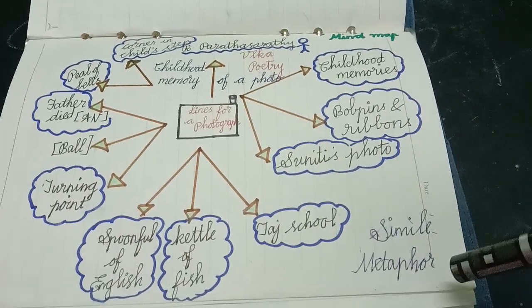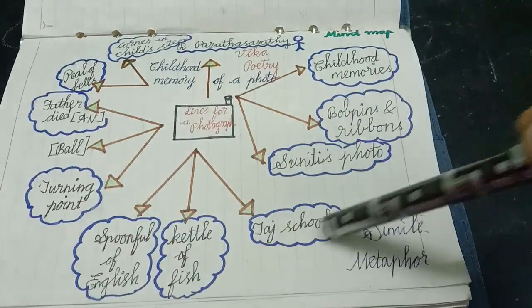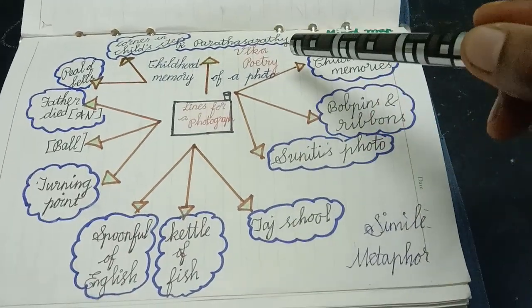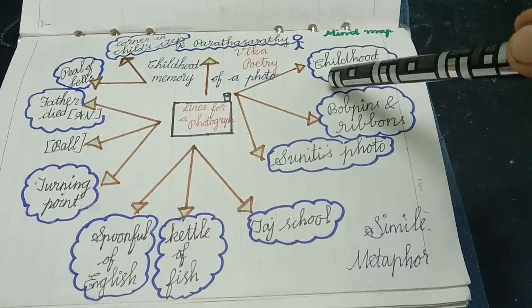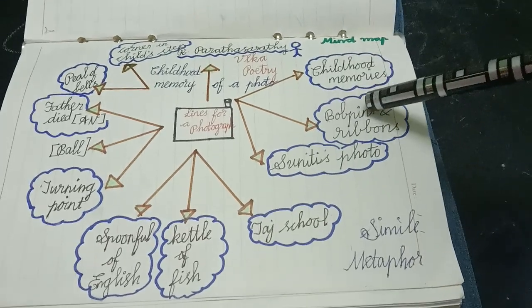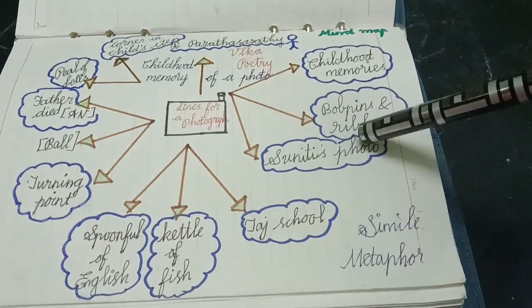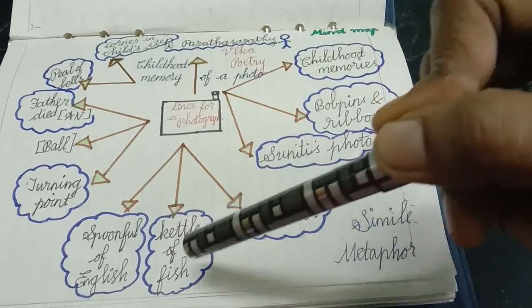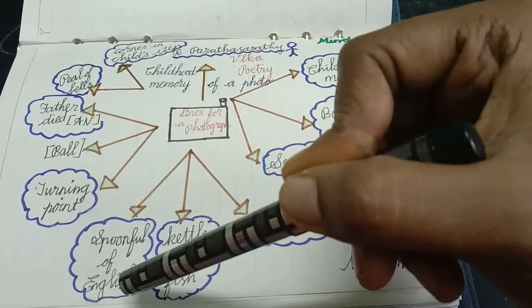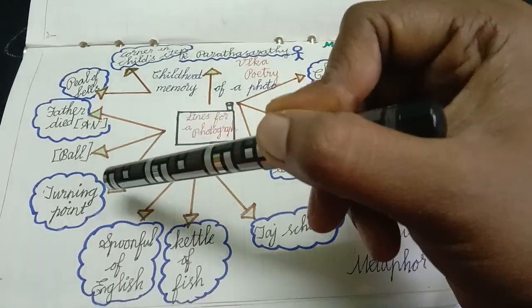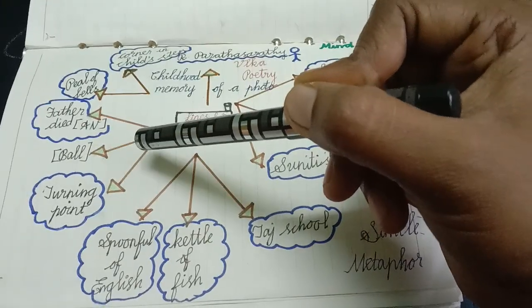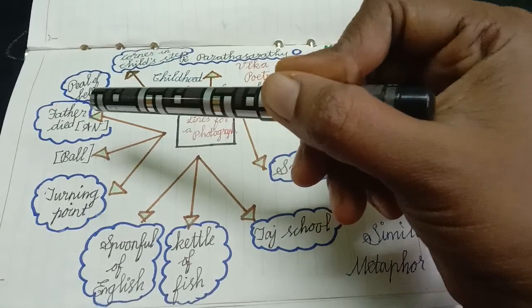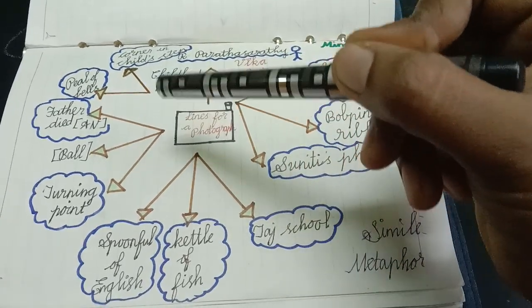So the poem is about a childhood memory of a photo, a childhood memory with poppins and ribbon. Suniti's photo. They studied in a school, that school kettle of fish and spoonful of English they learned. In Suniti's life, it is a turning point. She turned like a ball. Father died one afternoon, it looks like a pill of bills, and she turned into corner in child's tip.